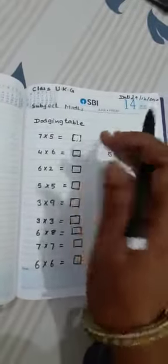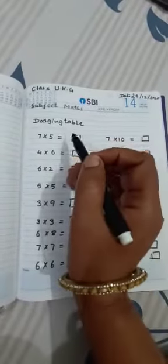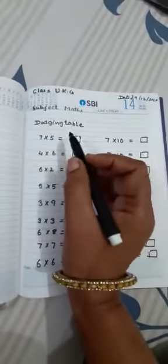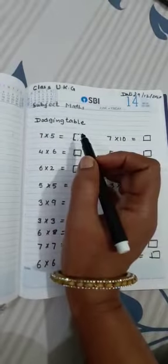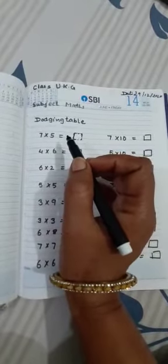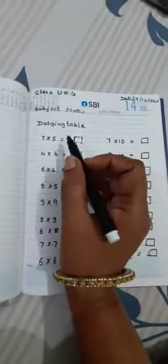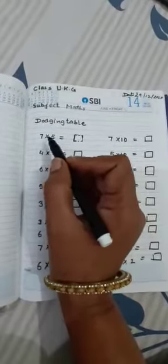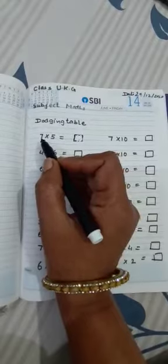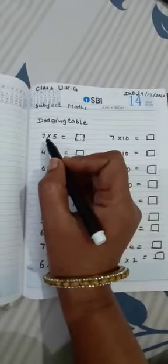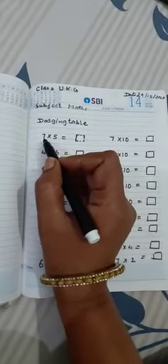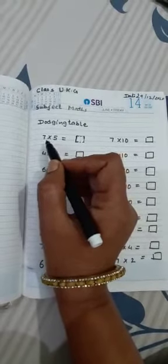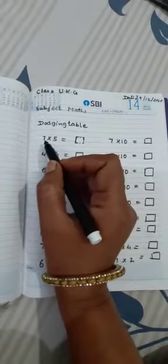Now look here, first watch what I am doing, after that repeat the same thing. Look here, you have to read the table. For example, you have to read this question 7 × 5. This means first you will read table of seven five times.